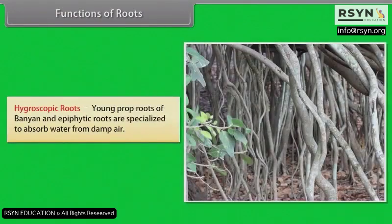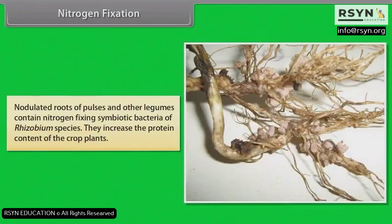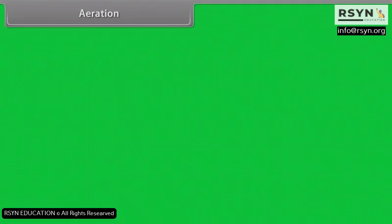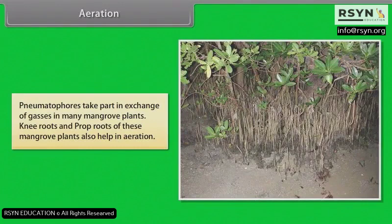Hygroscopic roots: Young prop roots of banyan and epiphytic roots are specialized to absorb water from damp air. Nitrogen fixation: Nodulated roots of pulses and other legumes contain nitrogen-fixing symbiotic bacteria of Rhizobium species; they increase the protein content of the crop plants. Aeration: Pneumatophores take part in exchange of gases in many mangrove plants; knee roots and prop roots of these mangrove plants also help in aeration.